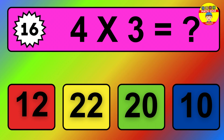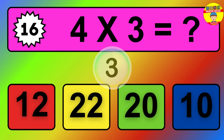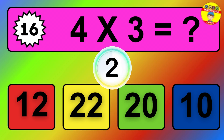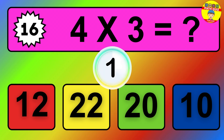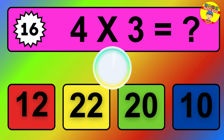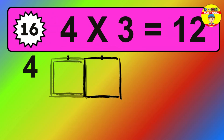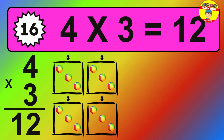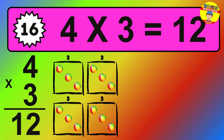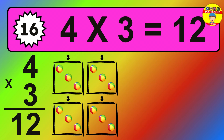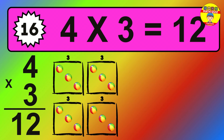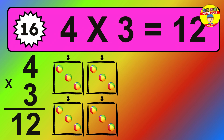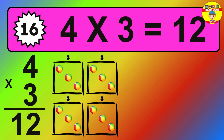Question sixteen: four times three equals what? The answer is: four times three is 12. To calculate, we have four groups with three balls each one. So how many balls do we have? 12 balls.